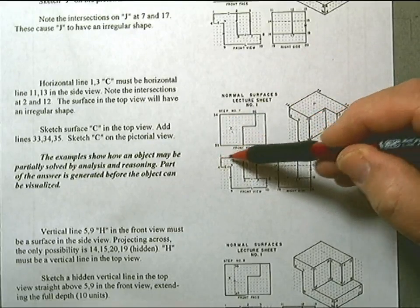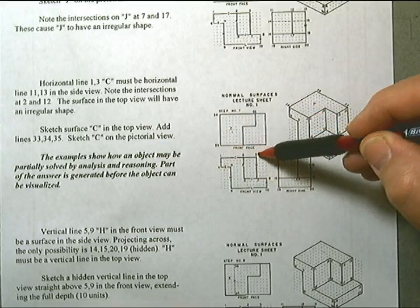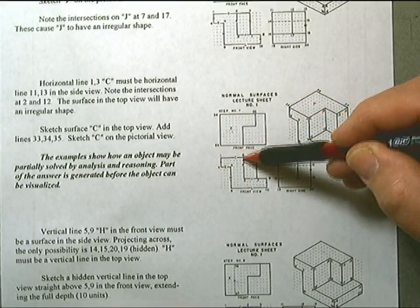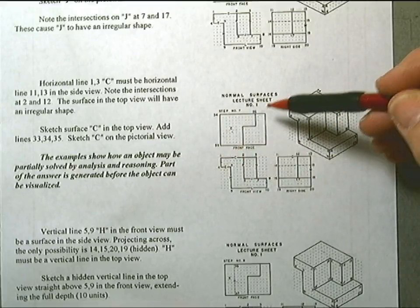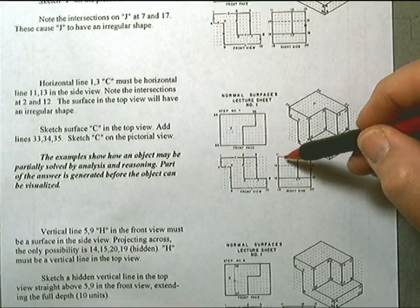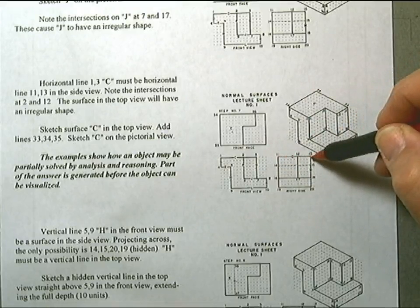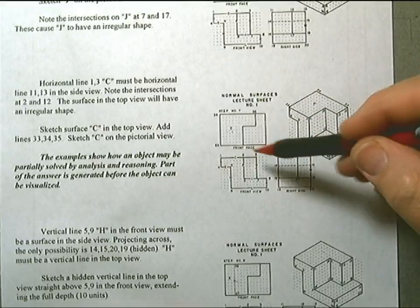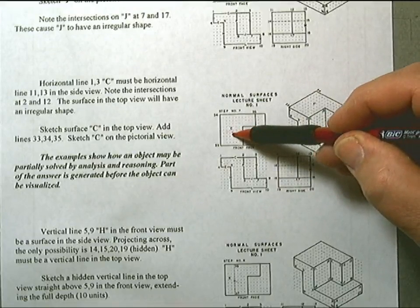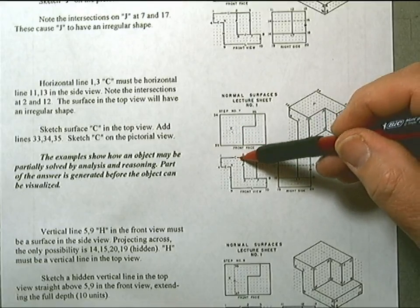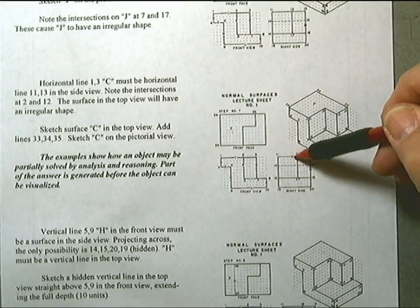This entire edge in the front view. Here's an intersecting line, and it becomes a horizontal edge in the side view. So top surface creates a horizontal and a horizontal.